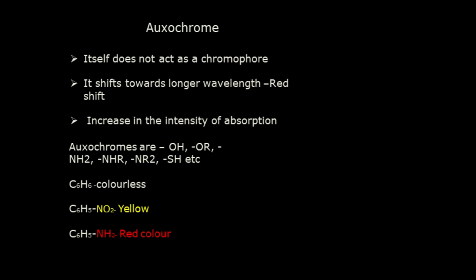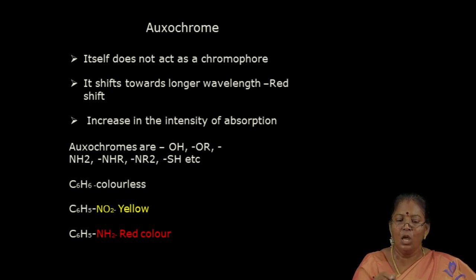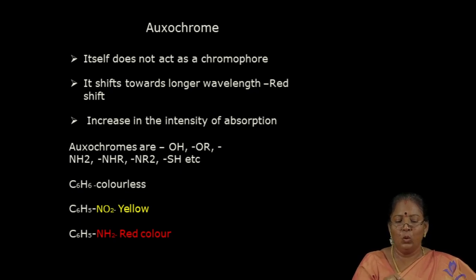Oxochrome groups include O-H, O-R, amino, N-H-R, N-R2, and S-H (thio) groups, which are color-enhancing groups. They shift the lambda max value towards the red-hand side, so they are otherwise called color-enhancing groups. Benzene is colorless. If NO2 is substituted along with benzene, it becomes yellow. If an amino group is substituted along with benzene, it becomes red in color. So color-enhancing groups are also identified using UV spectroscopy. UV spectra is used to identify unsaturated compounds, conjugated compounds, and coloring compounds, as well as the intensity variation. By using that variation, we may identify some functional groups substituted in the ortho, meta, or para positions of the benzene ring. Thus we can utilize UV spectra to determine the structure of a chemical compound as well as the substitutions of the chemical compounds. Thank you students.